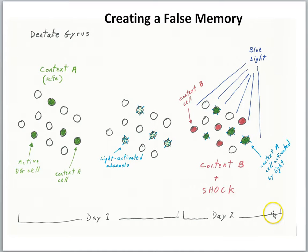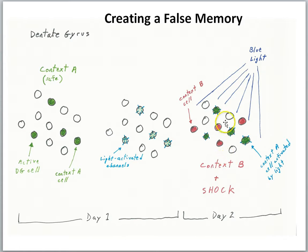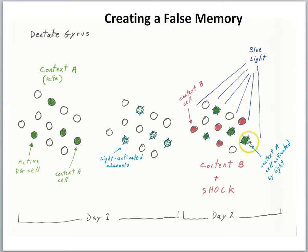On day two, they put the animal in context B — a different context, so a non-overlapping population of cells would be expected to respond. The animal was also shocked in context B, so the context B cells were forming a fear memory to context B. But while doing this, they were shining blue light, activating the context A cells as well. So A cells are activated, B cells are activated, and the animal is getting a shock. They wanted to see whether they could create a false memory — getting the animal to fear context A, which was safe, simply by pairing the activity of the engram A cells with a shock.